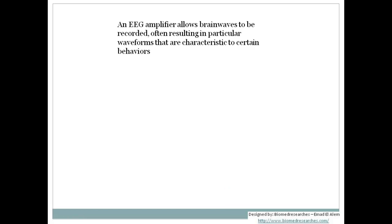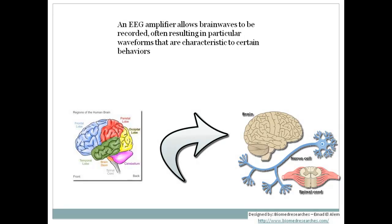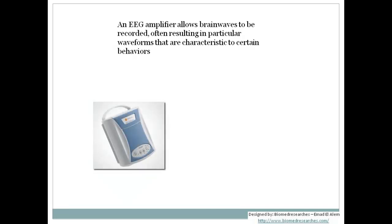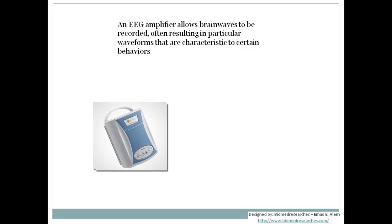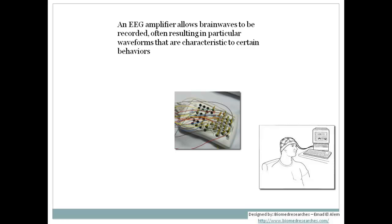An EEG amplifier allows the brain waves to be recorded, often resulting in particular waveforms that are characteristic to certain behaviors. Our brain consists of billions of neurons which generate potential differences. When we measure the potential difference of a specific area of the brain, we measure it from a group of neurons with the same specifications. The amplifier takes these potential differences, amplifies them, and makes them into a readable waveform format to be monitored, studied, and recorded.